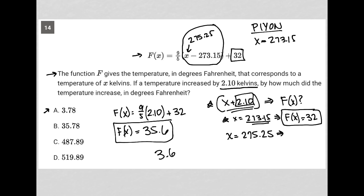Let's try that 9 fifths again. 9 divided by 5 is 1.8 times 2.10 is 3.78. Yes, made a mistake somewhere. Plus 32 is actually 35.78, not 35.6. Not quite sure how that happened.